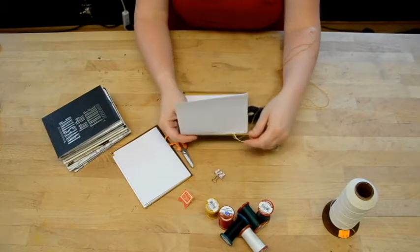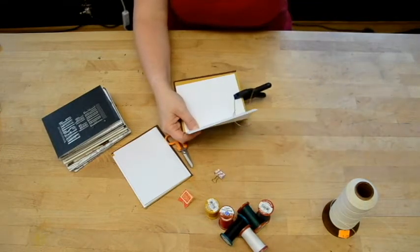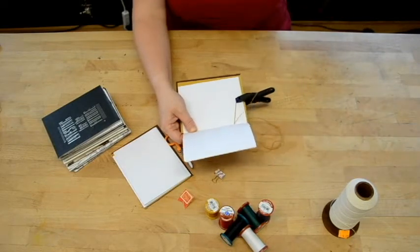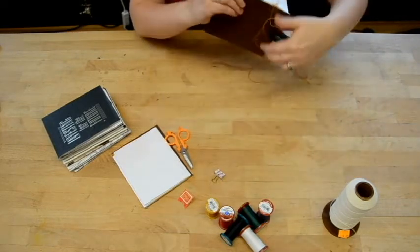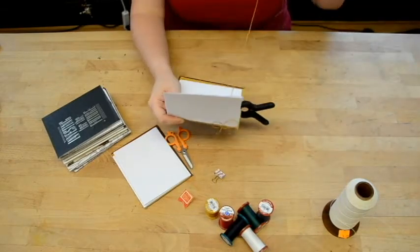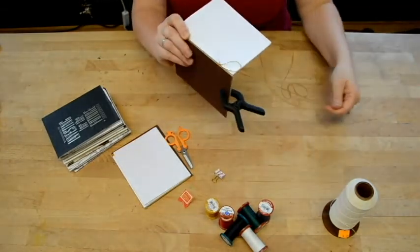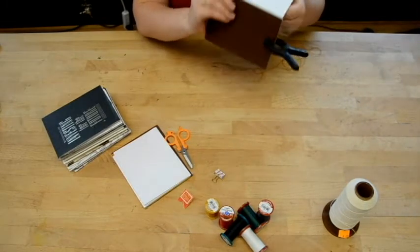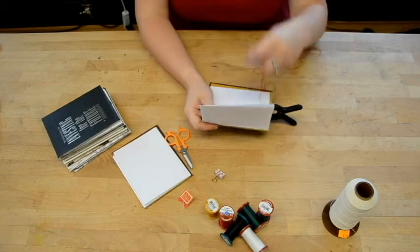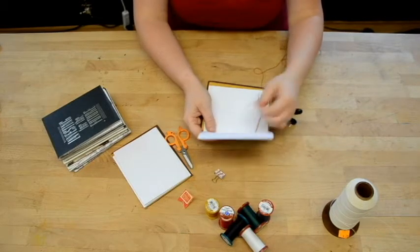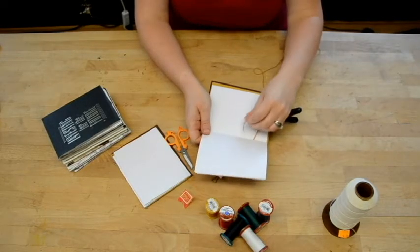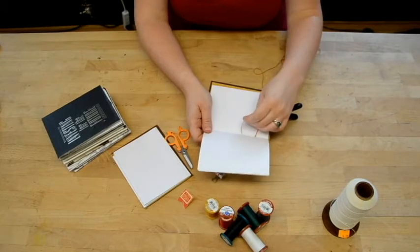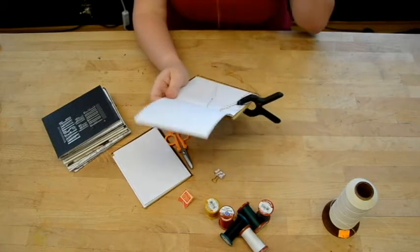And you bring that taut again. And then you go back inside the same hole that you came out of. Making sure to end up back in the center of the signature. And once you've made sure that you've gotten all the thread through and that you don't have any snags, you go down to the next hole. Each signature will have four holes in it. And down to the second hole. You go out from the inside.